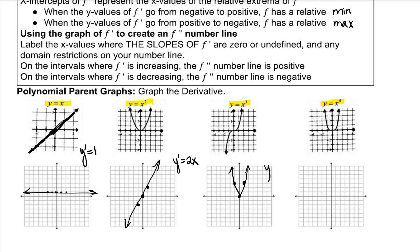Using the power rule, y prime is equal to 3x squared — a parabola with a vertical stretch of 3. For the last one, the slope at negative 1 appears to be negative 4, the slope at 0 is 0, and the slope at 1 is positive 4. Using the power rule, y prime is equal to 4x cubed. So we know this will not be linear — it will be cubic.